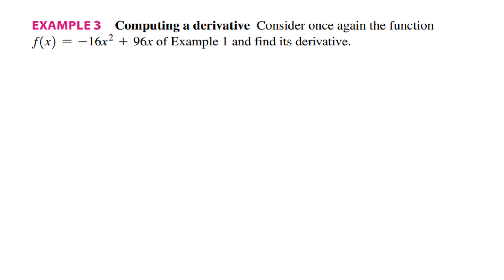Computing a derivative. Consider once again the function minus 16x squared plus 96x. This time we are going to find the derivative f prime of x without any single point — so let's do it generally. I will use the formula: the limit as h goes to 0 of f of x plus h minus f of x divided by h.